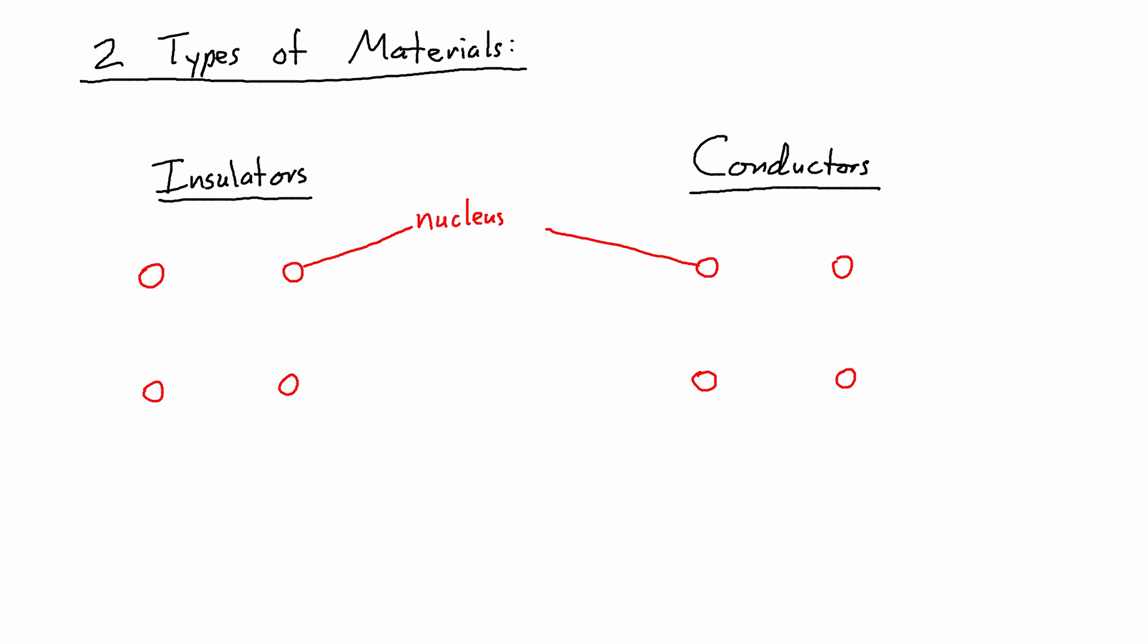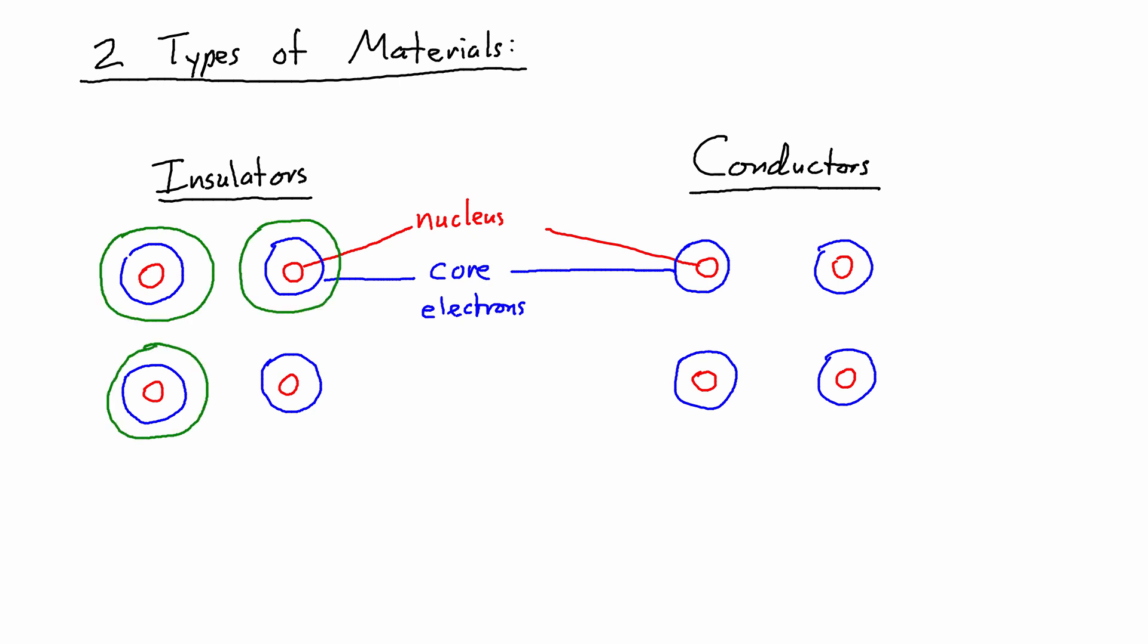I'll draw the nucleus in red, and then the nucleus is surrounded by core electrons. Where it gets different is in the valence electrons. If I have a rectangular piece of the insulator, I'm using this black line to represent the outside of it.